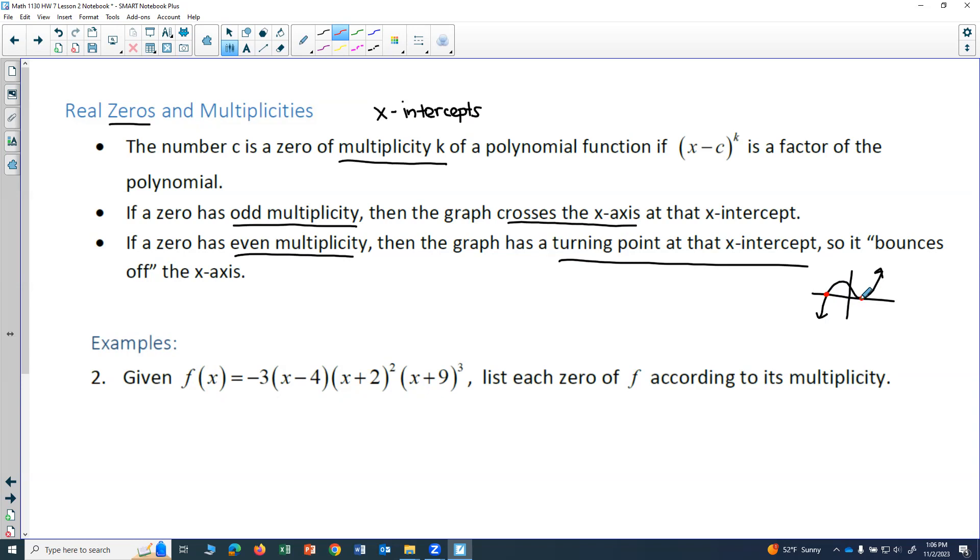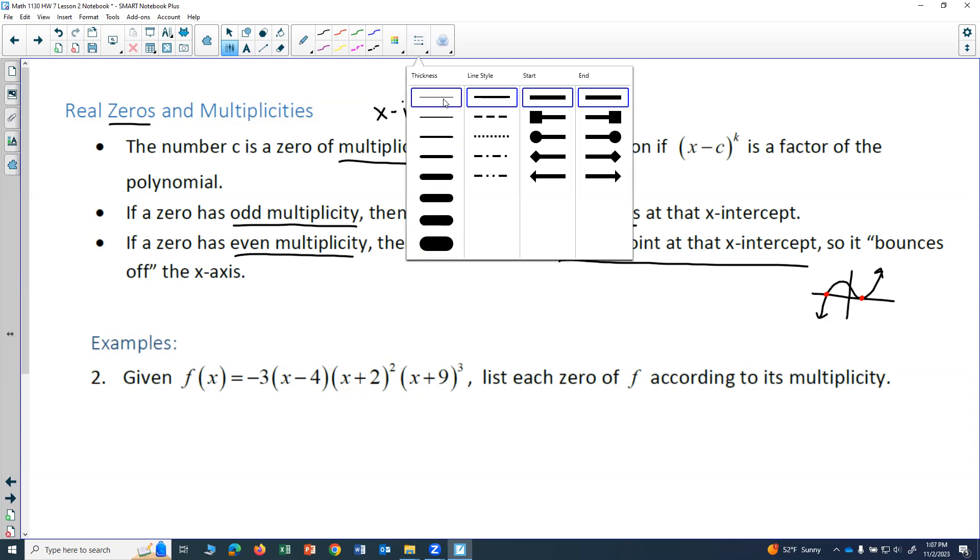But over here, where I have this x-intercept, the graph is not crossing the x-axis, but it is touching the x-axis and then bouncing off.